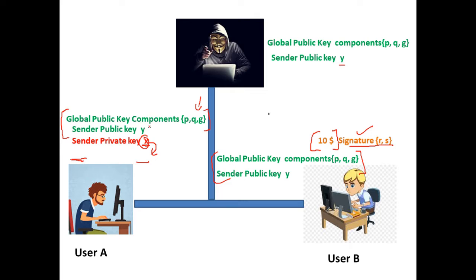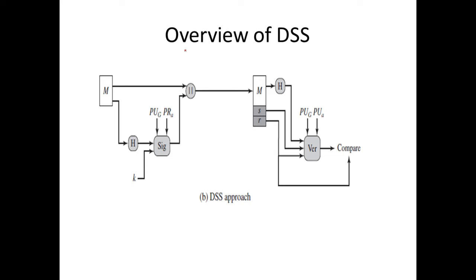Now we'll look at the textbook diagram showing how to generate public key components and the public/private key for user A. The message — say $10 — is fed to a hash function, SHA, producing message digest small m. A random integer K is selected and fed into the signature generation module, along with the global public key components P, Q, G and the private key X, to generate digital signature R, S.